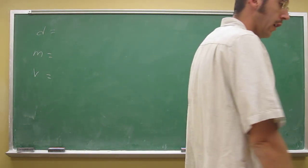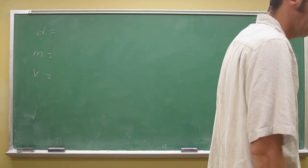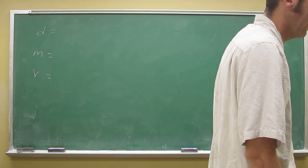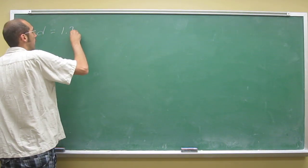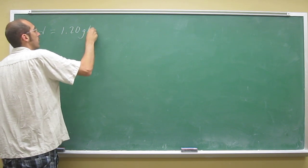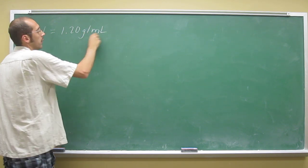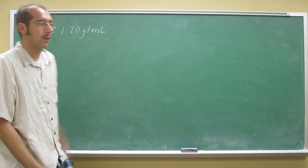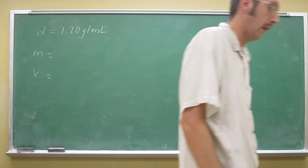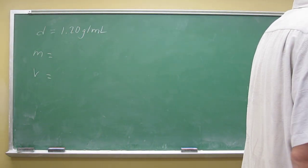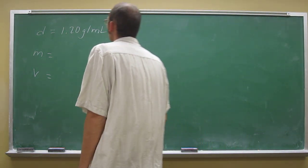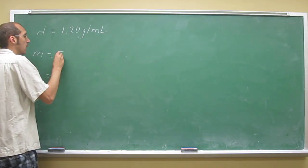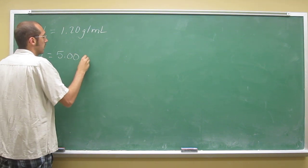So it says, calculate the volume in milliliters, so that's important, of a liquid that has the density of 1.20 grams per mil. Remember, liquids and gases are usually in units of milliliters and liters, respectively, and a mass of 5.00 grams.